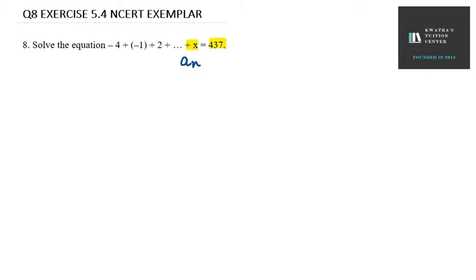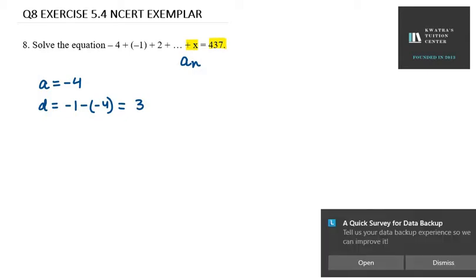So first, a equals minus 4. b will be minus 1 minus (minus 4), so it will be minus 1 plus 4, which equals 3. So the common difference d comes out to 3. Now we don't have the value of n.